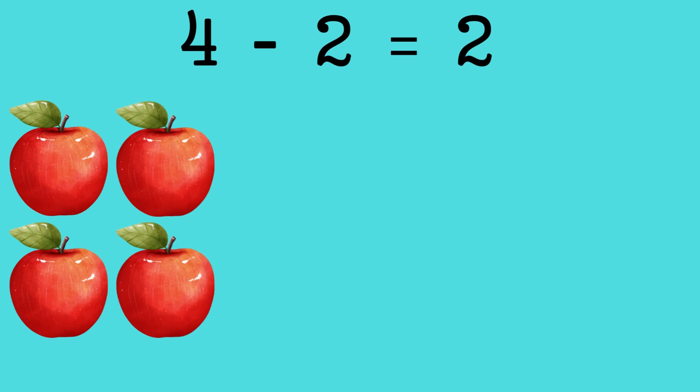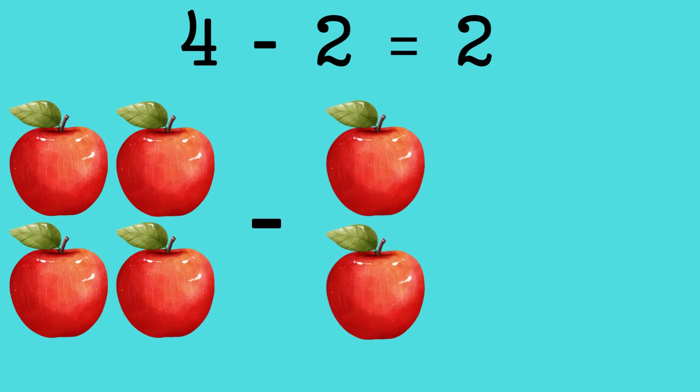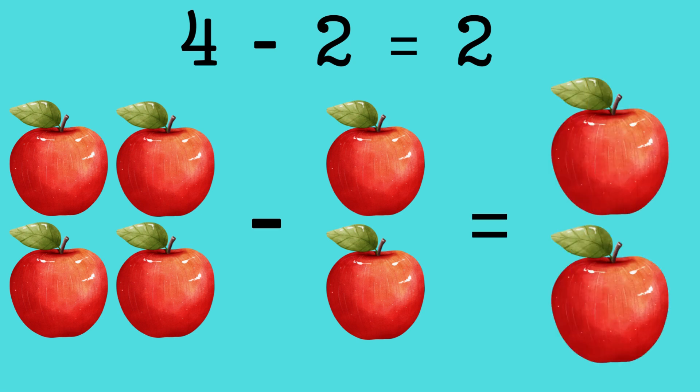4 minus 2 equals 2. Let's say you have 4 apples and you ate 2 apples. How many apples left? Correct, 2 apples.